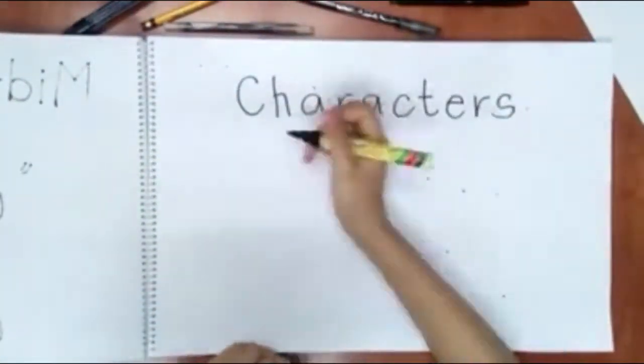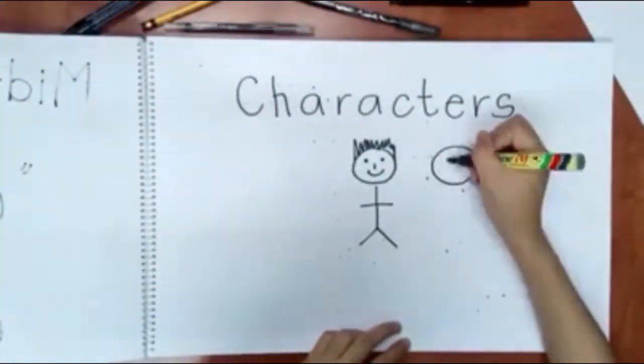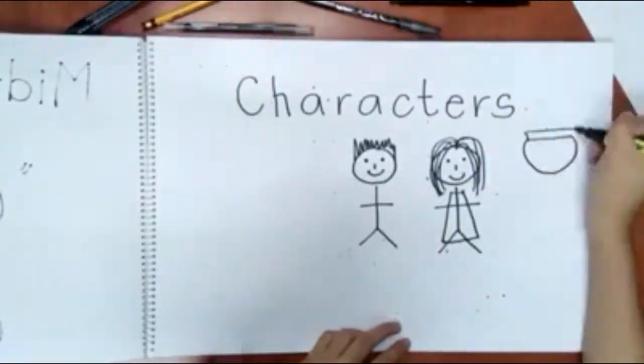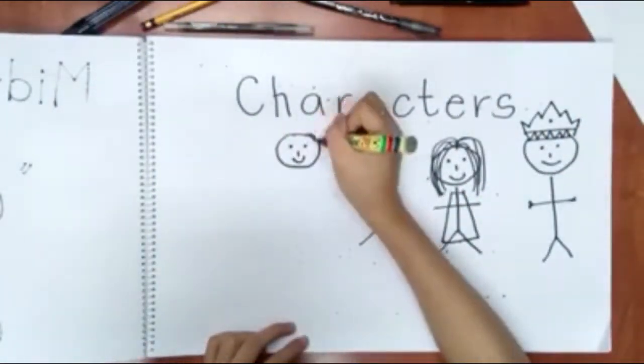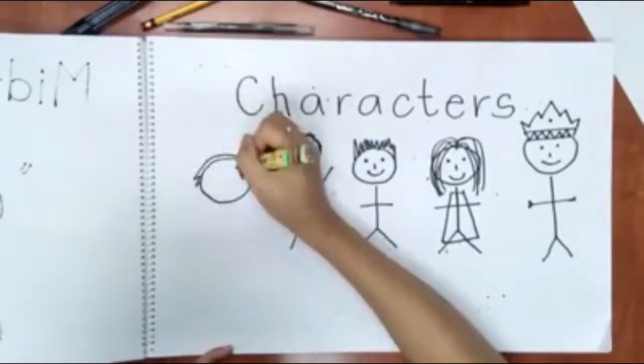The characters are Candide, who is the main character, Cunegonde, Baron, Pangloss and James.